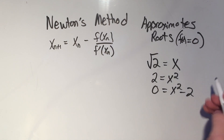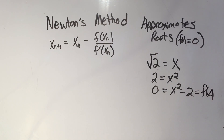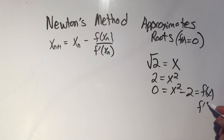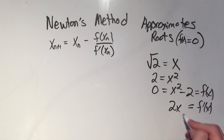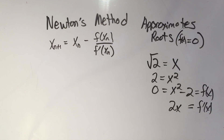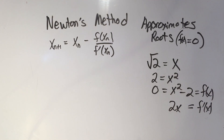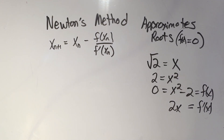So this is the function I'm going to use: f(x) = x squared minus 2. That means the derivative f'(x) is 2x, since the derivative of x squared is 2x and the derivative of negative 2 is 0. Now I've got my function and my derivative to plug into the formula.